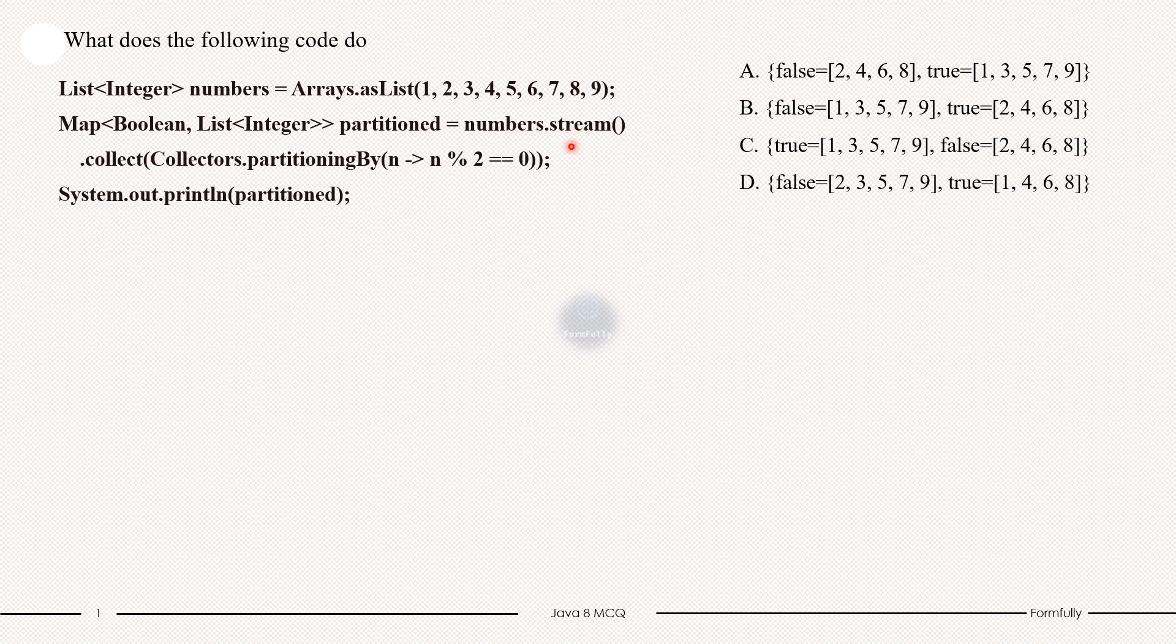Then the partitioningBy collector is used to partition elements into two groups: those that satisfy a given condition and those that do not. Because of the predicate, we have used a predicate here. The condition is specified using a lambda expression which checks if the number is even. If n mod 2 equals 0, return true, the number is even, otherwise it is odd.